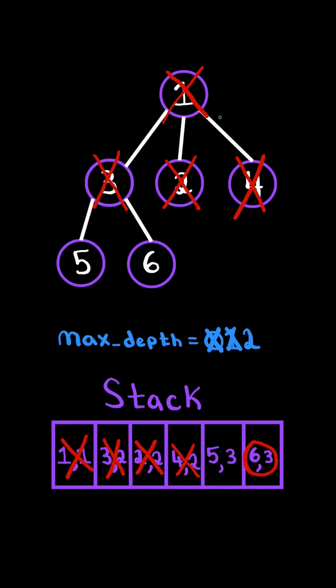We pop from the stack, and notice its depth is greater than max depth, so we update max depth. Node 6 does not have any children, so we don't append to the stack. And we continue.